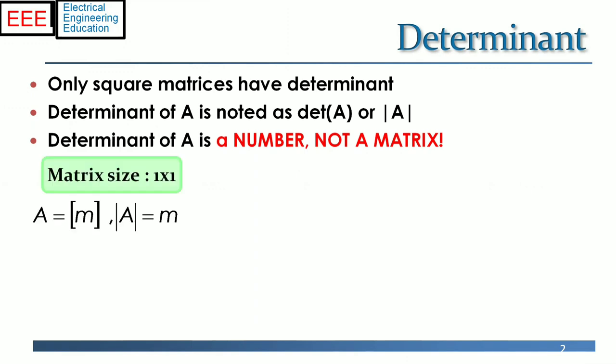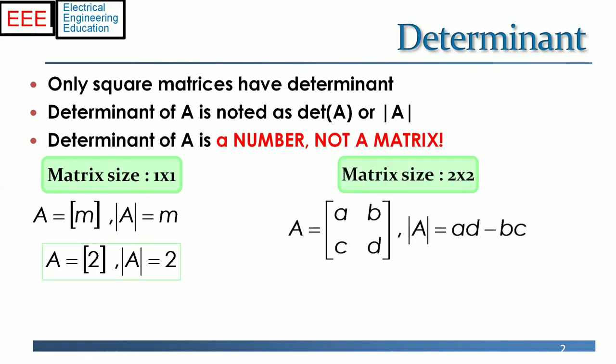For a 1 by 1 matrix, the determinant is equal to the element value as shown on the left. The determinant of a 2 by 2 matrix is shown on the right. Each determinant of a 2 by 2 matrix is called a minor of matrix A.